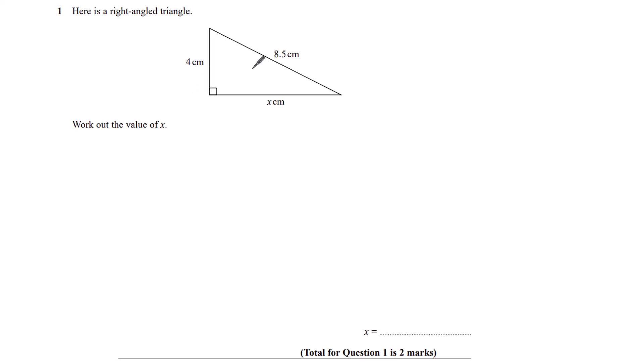Right-angled triangle, Pythagoras. So Pythagoras' theorem is the square on the hypotenuse is equal to the sum of the squares on the other two sides.